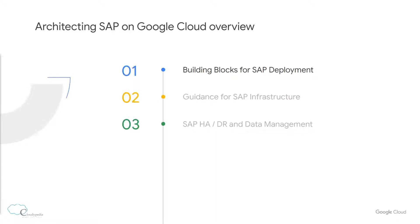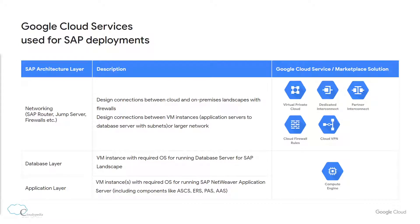Let's first start with the required services in Google Cloud Platform for a typical SAP deployment. For each SAP architectural layer there are services that can be used. For the networking layer, services like Virtual Private Cloud (VPC), which is used to manage networking for Google Cloud resources; Dedicated and Partner Interconnect, which provides connectivity between your on-premise network and your Google Cloud network through a direct physical connection or a supported service provider; Cloud Firewall Rules, which lets you allow or deny connections to or from your virtual machines; and Cloud VPN, which enables connection between your local or on-premise network and your Virtual Private Cloud network through an IPSec VPN connection.